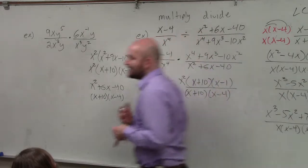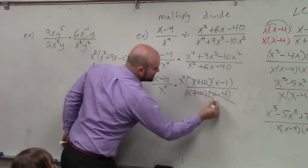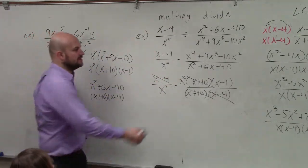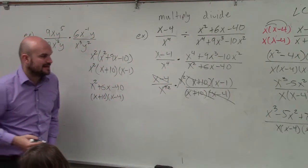So therefore, now I can see that my x minus 4s divide out. My x plus 10s divide out. x squared divided by x to the fourth is going to leave me with an x squared in my denominator.